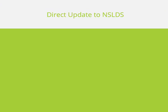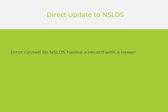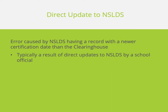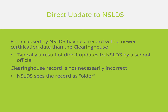The first scenario for Error Code 32 is a direct update to NSLDS. For this scenario, Error Code 32 is caused by NSLDS having a record with a newer certification date than the clearinghouse. Typically this means that a direct update was made by someone at your school without the same update being made in the clearinghouse afterwards. The Error 32 does not mean that the clearinghouse record is incorrect — it just means that NSLDS is seeing it as older than their data.